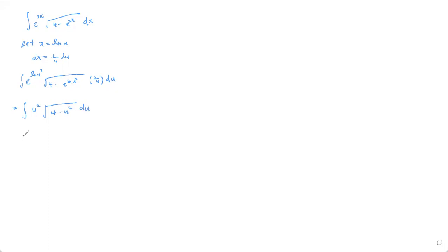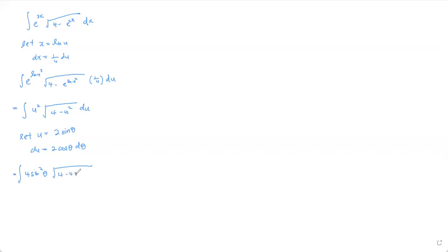From here, we can introduce a trig substitution. I'm going to let u = 2sinθ, so du = 2cosθ dθ. Substituting in, the expression becomes ∫ 4sin²θ · √(4 − 4sin²θ) · 2cosθ dθ.